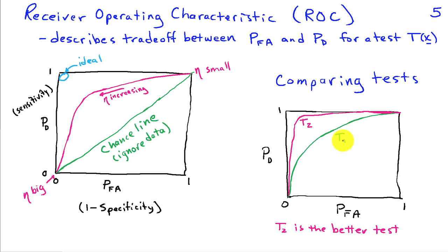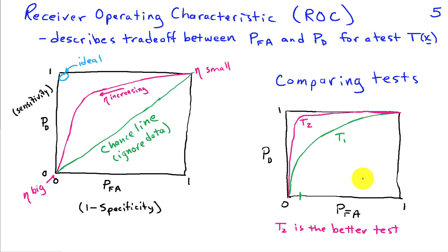ROC curves provide a convenient way to compare different tests independent of the threshold. If one test T1 has its performance shown in green and another test T2 shown in red, and T2's curve lies above T1's, then T2 is clearly the better test: for any given probability of false alarm, T2 achieves a higher probability of detection. So the ROC is often used to characterize and compare test performance, and we'll look at specific testing strategies for deciding between hypotheses in another lecture.